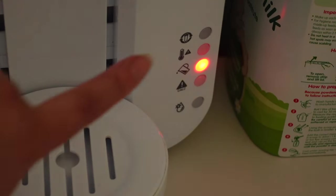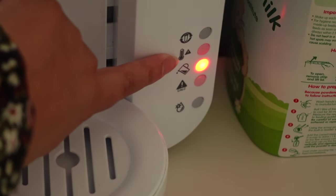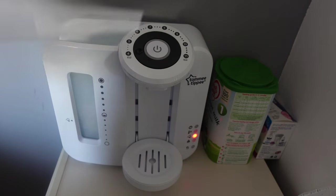Before we get started with making up some formula, we need to make sure we've got some water in the tank. This red light indicates that the tank is empty, and I like to empty the water out every 24 hours so I normally fill it up at the beginning of every night.